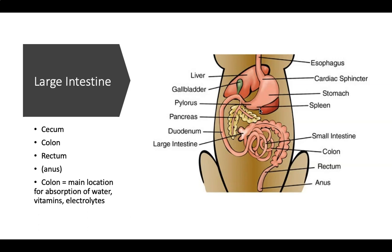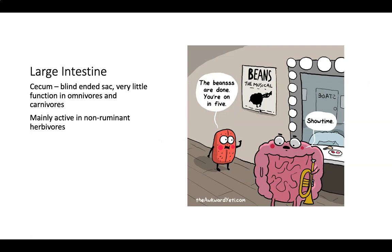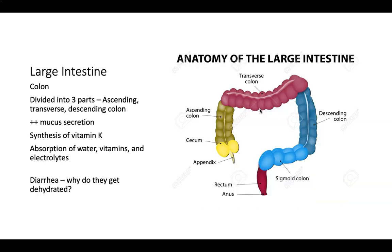The large intestine includes the cecum, the colon, and the rectum — with the rectum generally combined with the anus in literature. The colon is the main location for absorption of water, vitamins, and electrolytes. The cecum is a blind-ended sac with very little function in omnivores and carnivores; it is mainly active in non-ruminant herbivores such as horses.